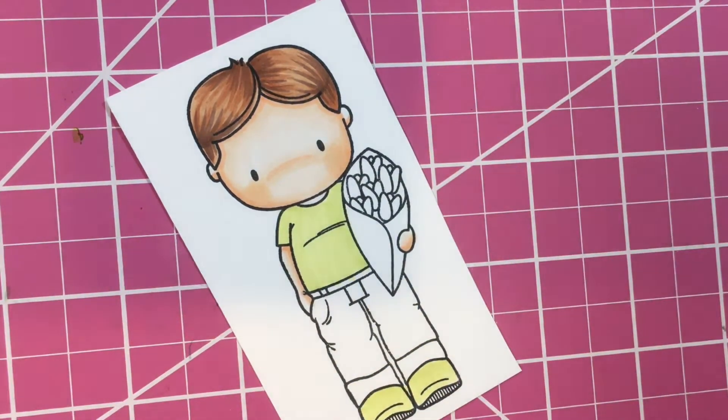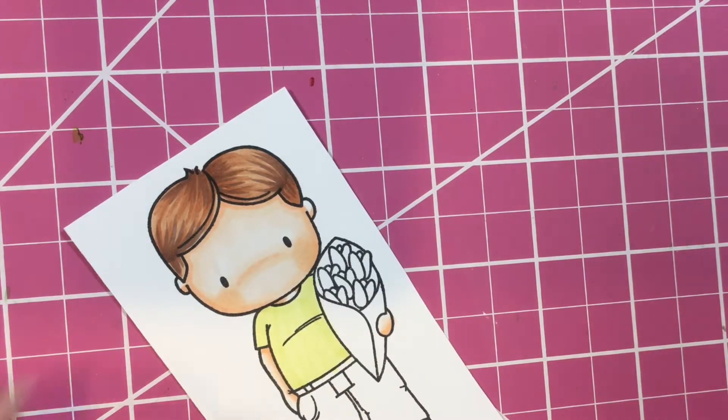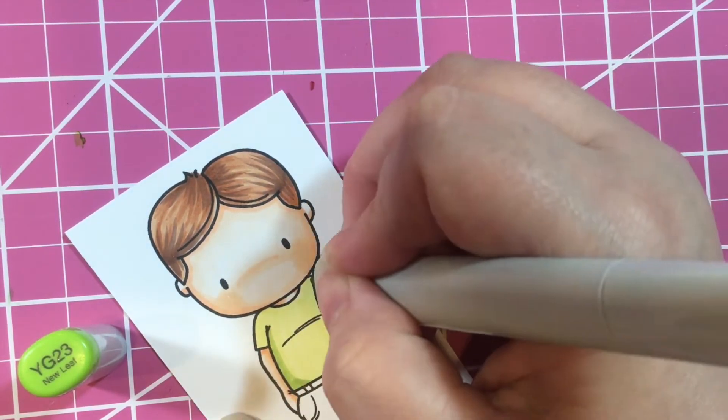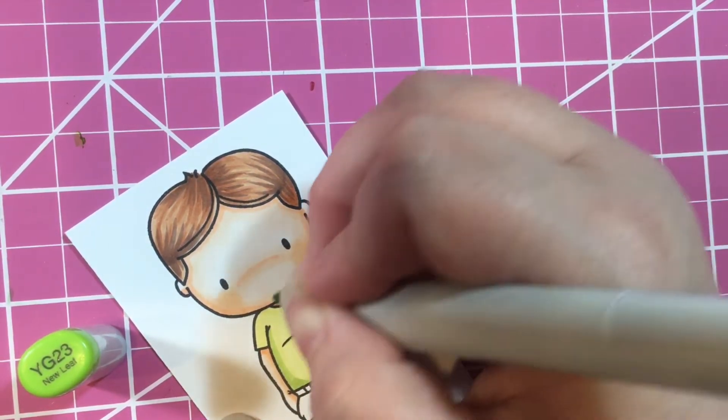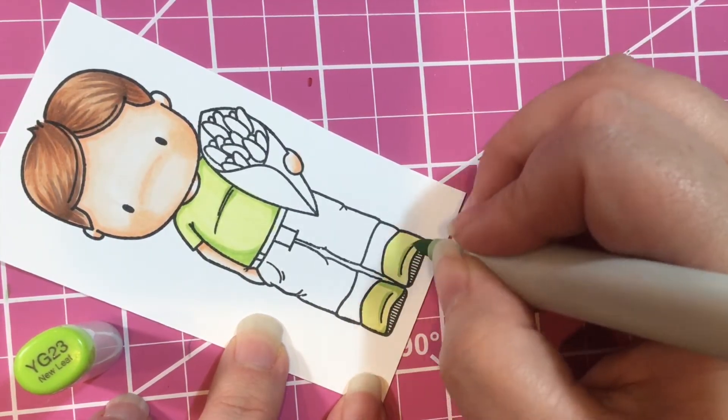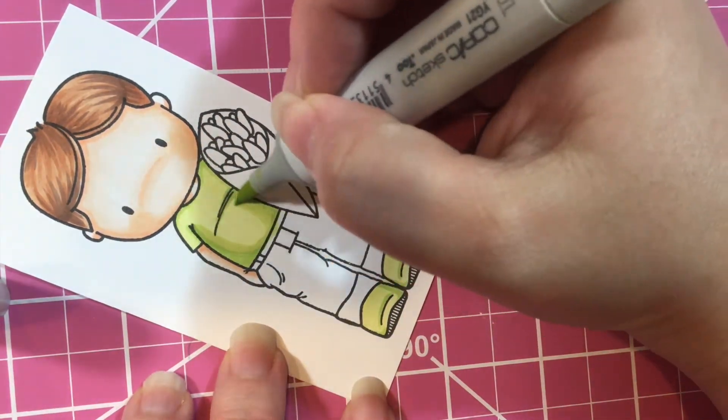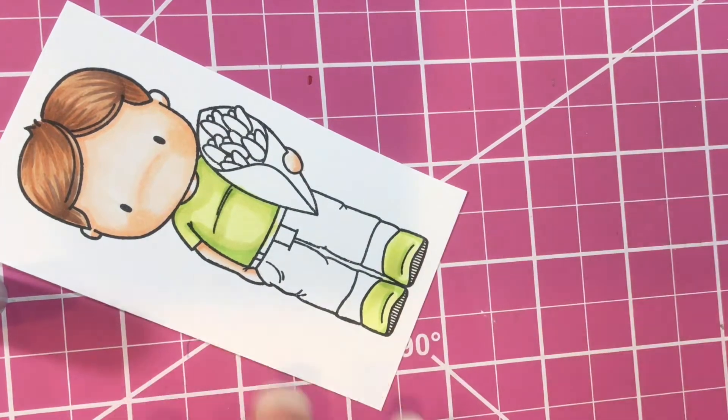For his shirt and shoes I went with my favorite green springy combo, which is YG21, YG23, and YG25. This green combo just makes me really happy. It reminds me of when spring comes, the grass starts turning green, and you know spring is just around the corner.